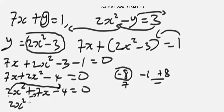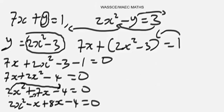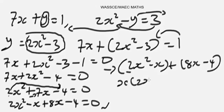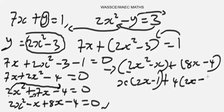We rewrite as: 2x² - x + 8x - 4 = 0. Now we apply factor by grouping. Grouping the first two and last two terms: (2x² - x) + (8x - 4). Factorizing the first bracket gives x(2x - 1), and factorizing the second bracket gives 4(2x - 1).